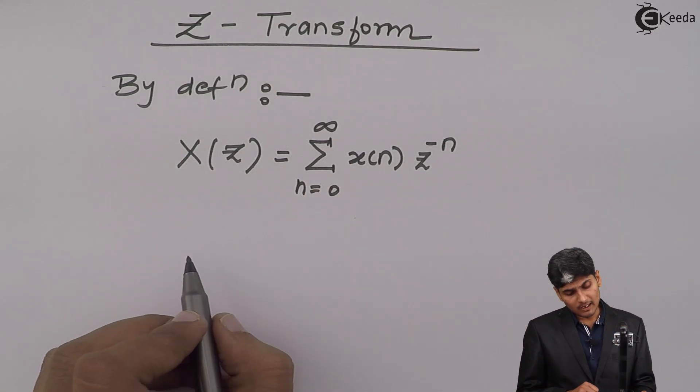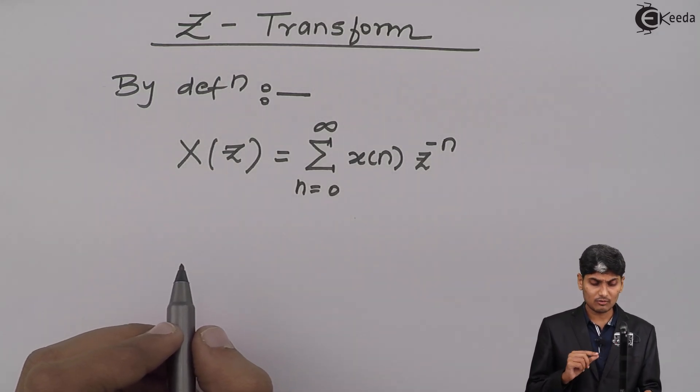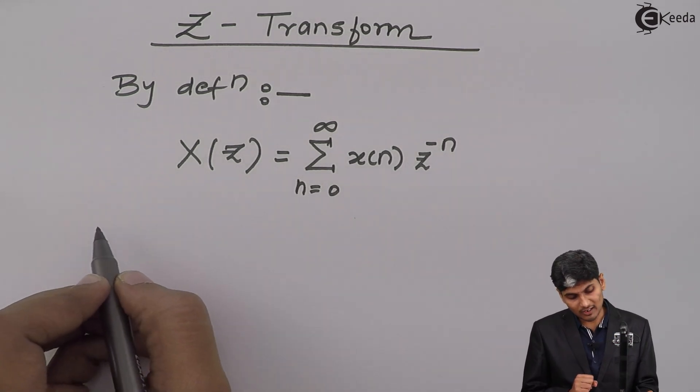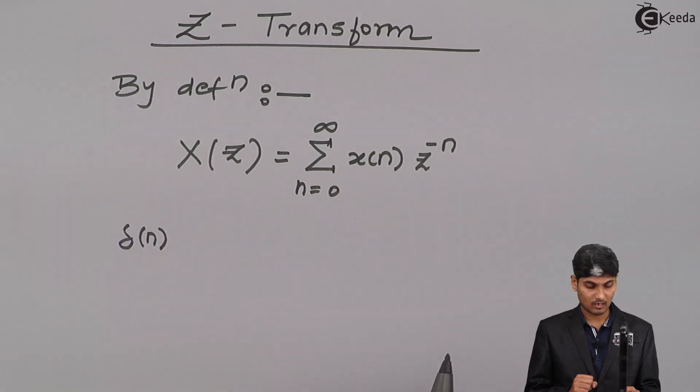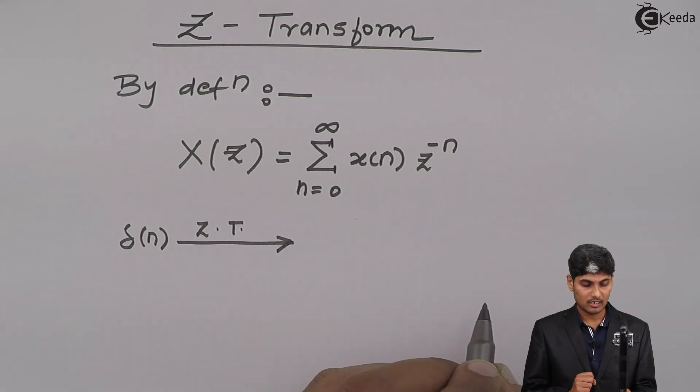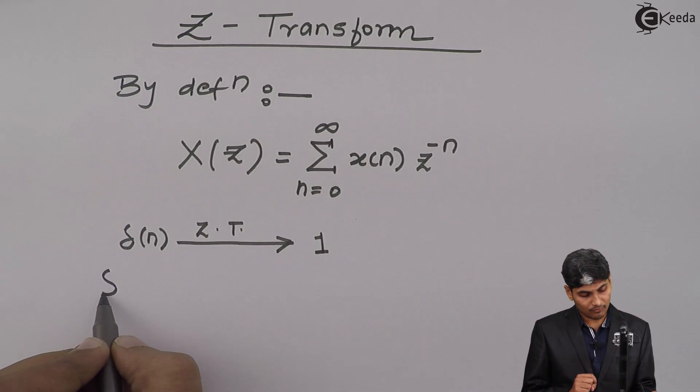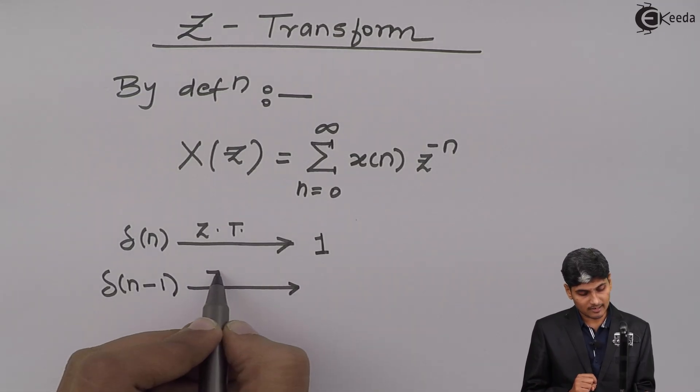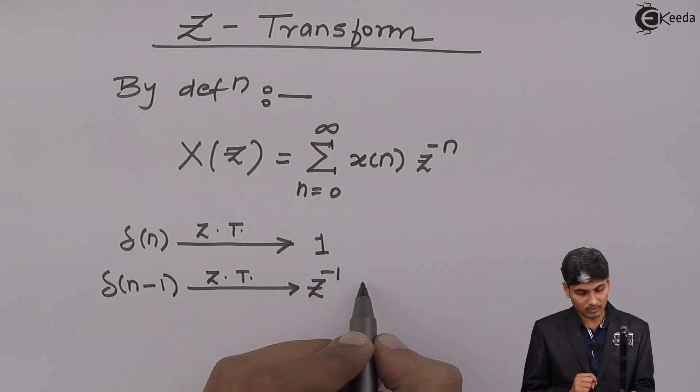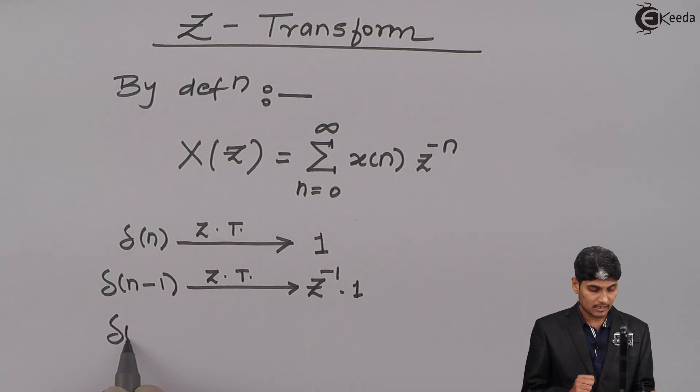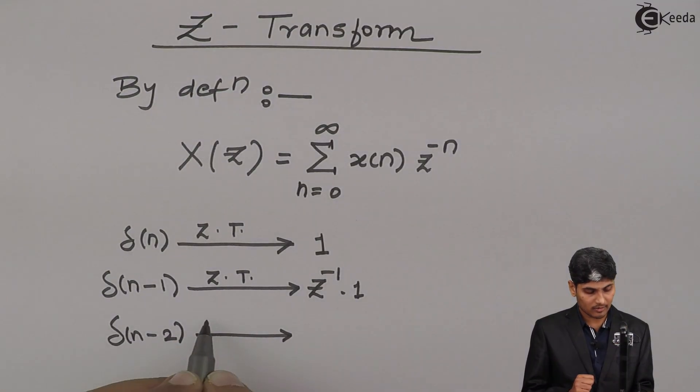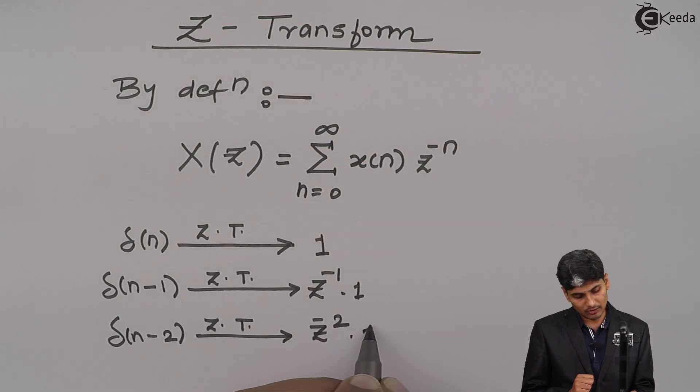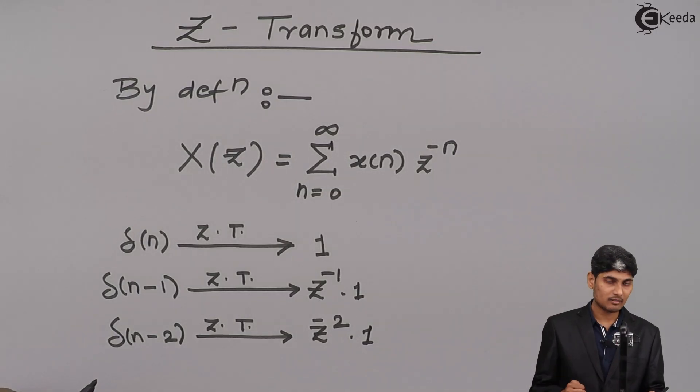Let us see some Z transforms which are useful for our concept. If I have a signal delta(n) and apply Z transform to it, then I will get 1. If I have delta(n-1), then its Z transform is z^(-1). If I have delta(n-2), then its Z transform is z^(-2). So if I'm delaying a signal, I have to multiply by z^(-n). As we discussed previously, minus means shifting the signal to the left, plus means shifting to the right.